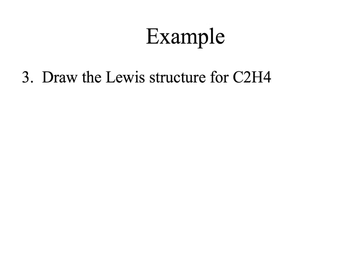We're going to draw the Lewis structure for C2H4, which is ethene. We have two carbons and four hydrogens. Carbon is our least electronegative, and there are two of them, so we're going to put two carbons in the middle.